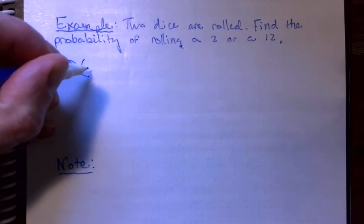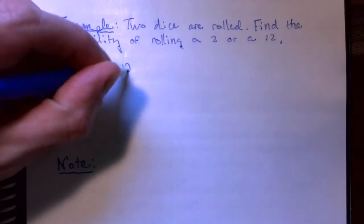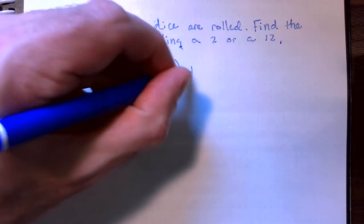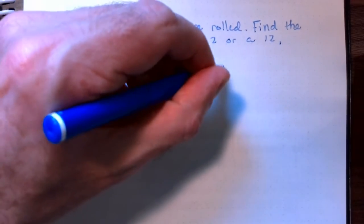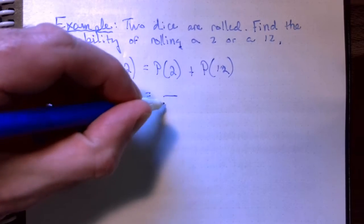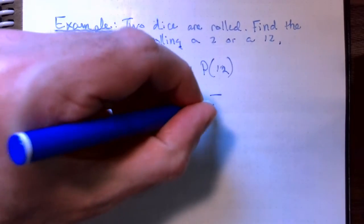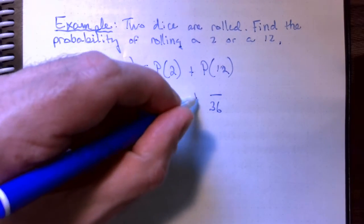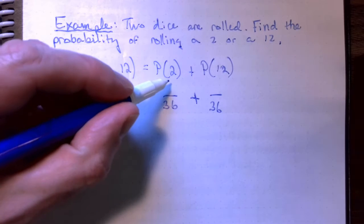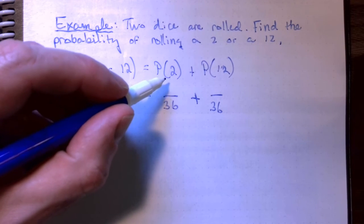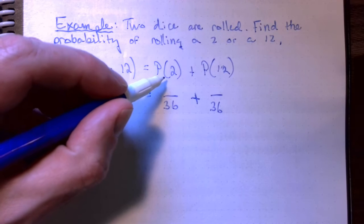The probability of 2 or 12 is equal to the probability of rolling a 2 plus the probability of rolling a 12. Now, we know when we roll two dice that there are 36 possible outcomes. If you look at a previous video, we had a table where we listed all of them out.